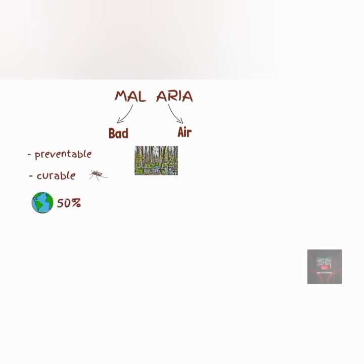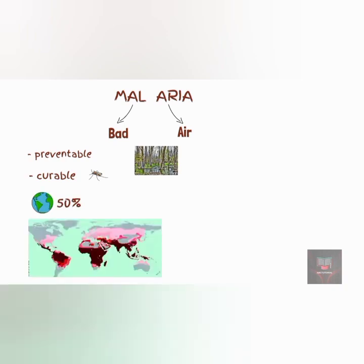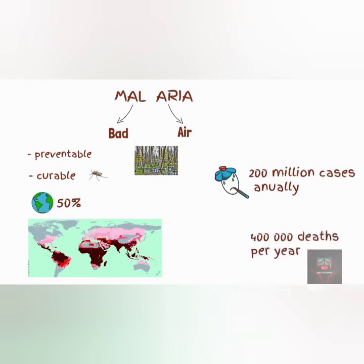Around half of the world's population is believed to be at risk of malaria infection, with the majority being people living in the tropical and subtropical regions. About 200 million cases of malaria occur every year, resulting in about 400,000 deaths every year.